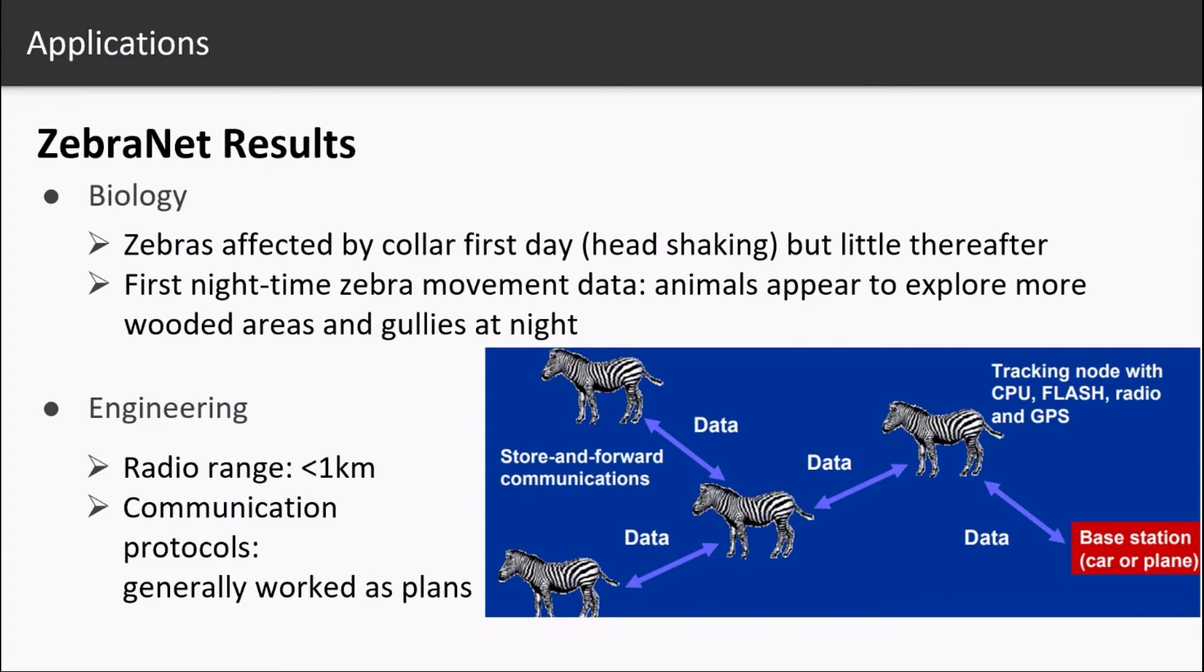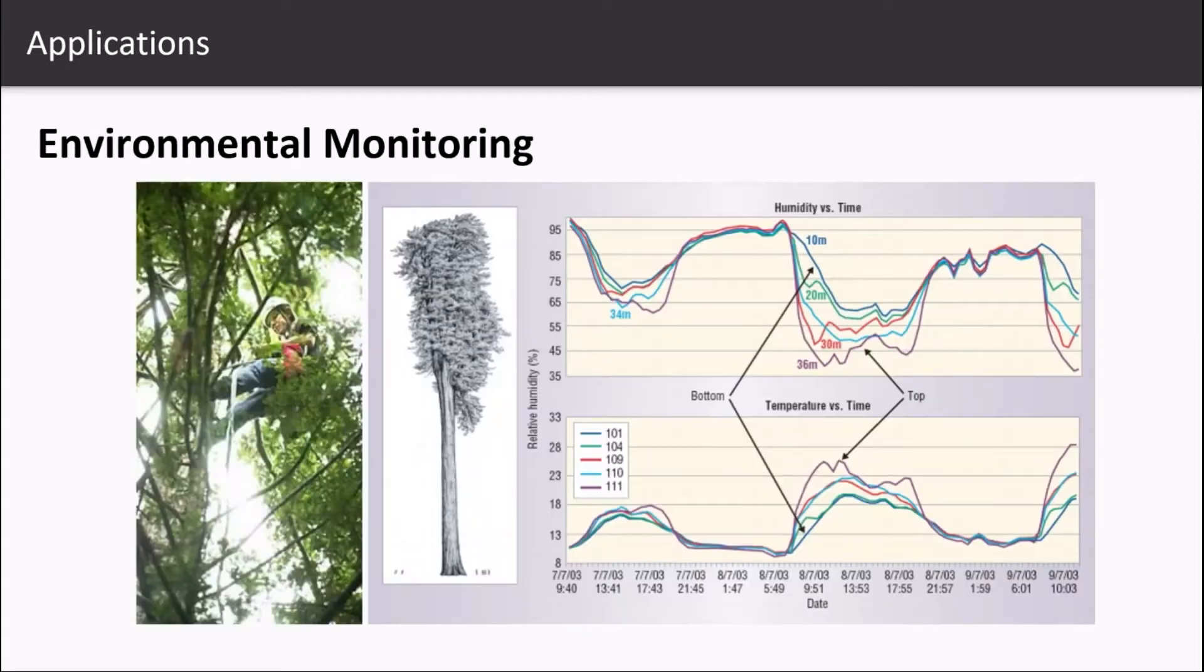Sensor nodes are deployed to study the environment. When sensor networks were not around, environmental scientists had to go deep into the fields and face harsh conditions each time they needed to record new observations. As you can see in the picture to the left, scientists used a winch to reach the top portions of trees and record measurements manually.